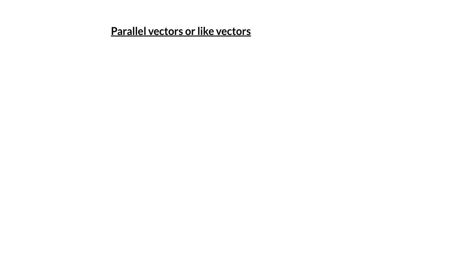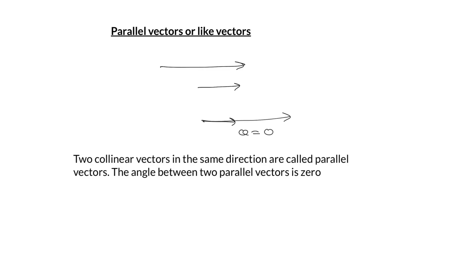Parallel vectors or like vectors: two collinear vectors in the same direction are called parallel vectors. For example, a vector towards right and another vector also towards right are parallel vectors. Their magnitudes may be the same or different — only their directions need to be parallel. The angle between two parallel vectors is equal to 0 degrees.